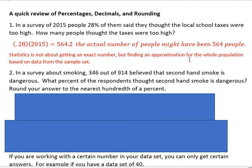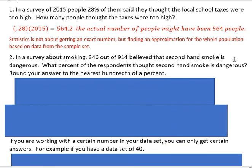In fact, sometimes using numbers that are too precise can be misleading. So if we were writing up a study, we might say about 560, just to get away from the idea of having an exact number. But you should know how to multiply a percentage times the sample size number to get the number they're looking for.